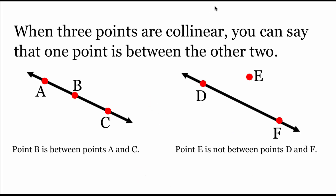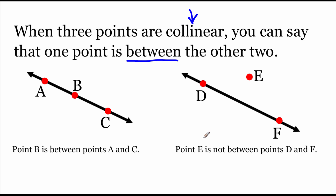One quick definition we'll need moving forward is the idea of points being between other points. If we're dealing with three collinear points — and that collinear piece is going to be really really important to us — we can say that one point is between the other two. So if we look at this example on the left, we can say that point B is between points A and C since those three points are collinear. Now if we compare that to the one on the right, point E is not considered to be between points D and F because point E is not on the same line as D and F.